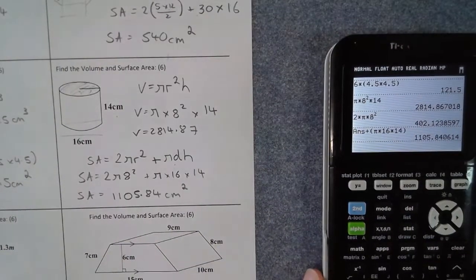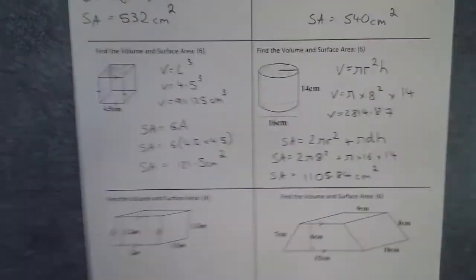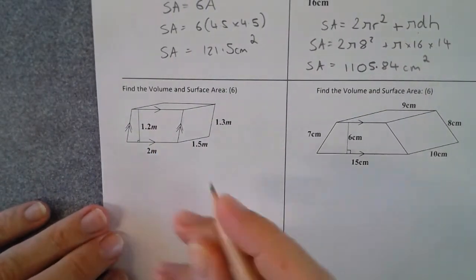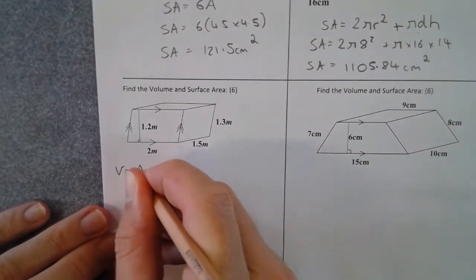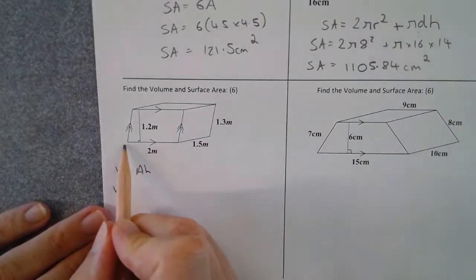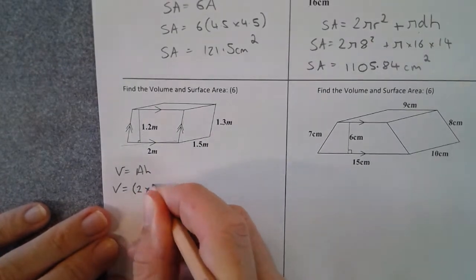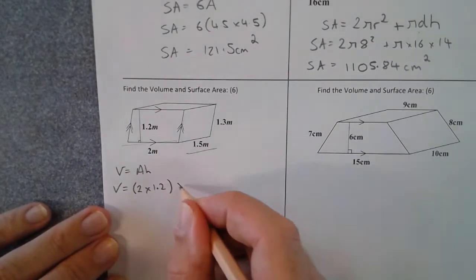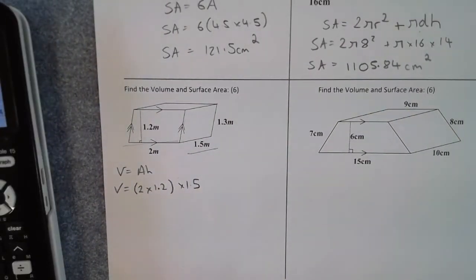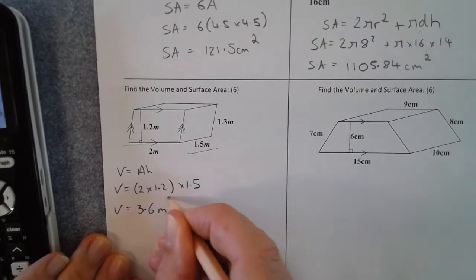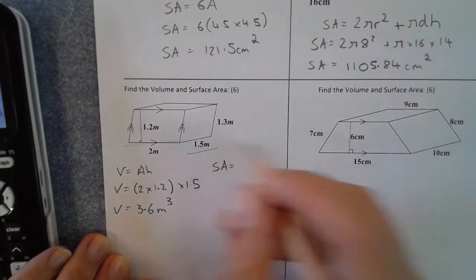These formulas are also on the worksheet. The next shape is a prism whose front face is a parallelogram. Volume equals A times h — the area of a parallelogram is base times height, so 2 times 1.2 — and the prism extends back 1.5. Typing 2 times 1.2 times 1.5 gives a volume of 3.6 meters cubed.